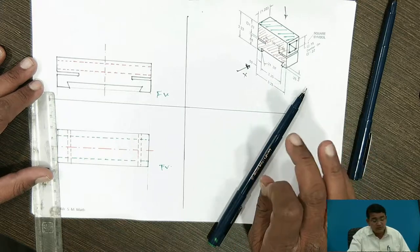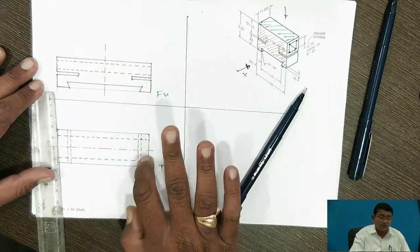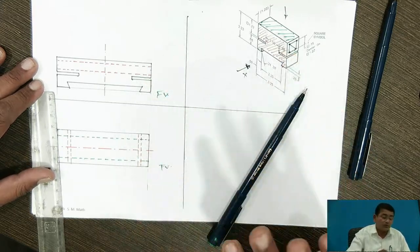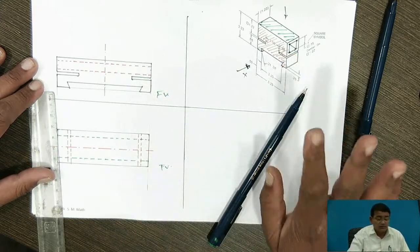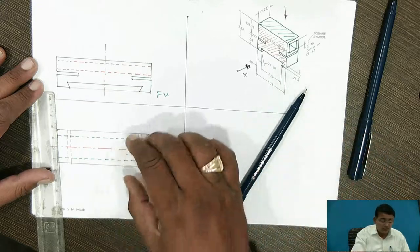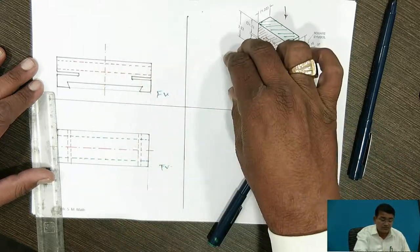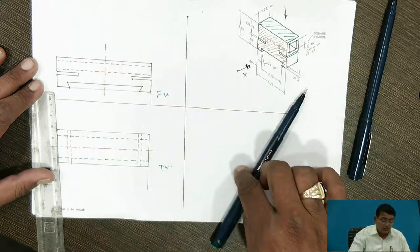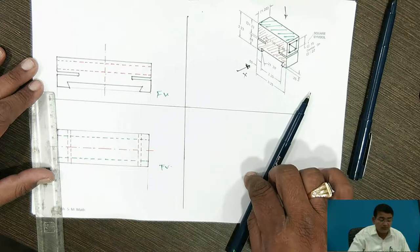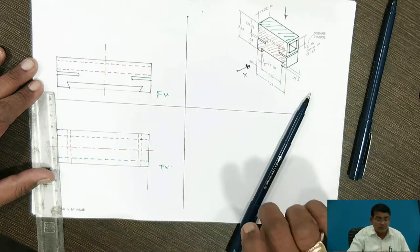From this front view and this top view, you have to draw the side view yourself. For the side view, you rotate the projections using a 45-degree line and draw the side view. Thank you.